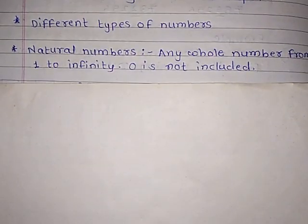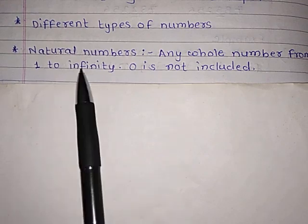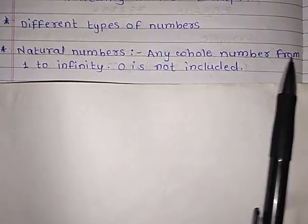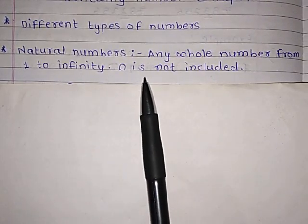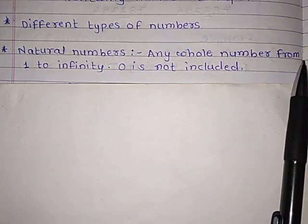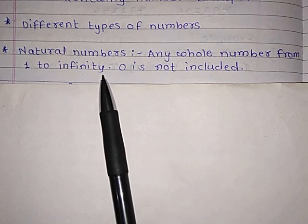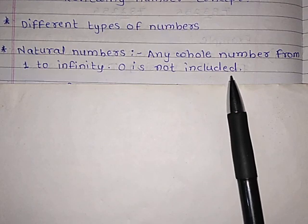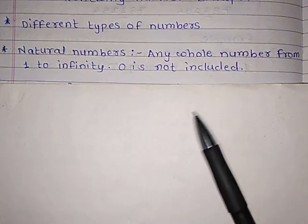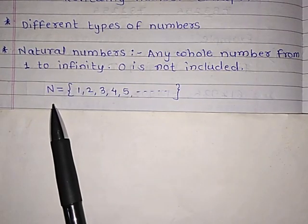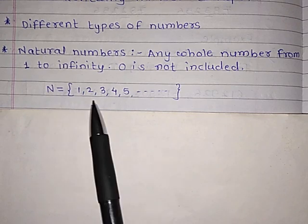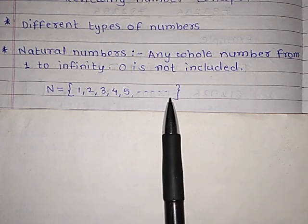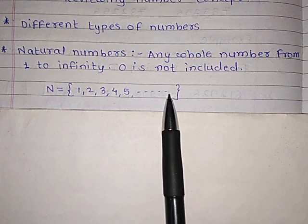First one: natural numbers. Any whole number from 1 to infinity — 0 is not included. Such types of numbers are called natural numbers. Natural numbers are indicated by the letter N and include numbers 1, 2, 3, 4, 5, and so on up to infinity.